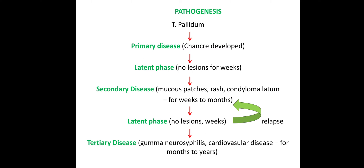In the latent phase, lesions may relapse. Tertiary disease involves gummatous exudation in large amounts. Neurosyphilis, gumma, and cardiovascular disease develop over months to years. These represent the primary, secondary, and tertiary stages of syphilis.